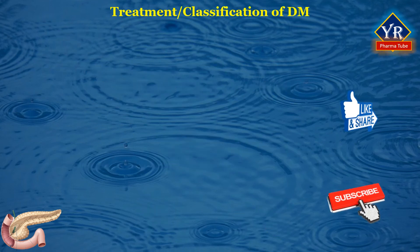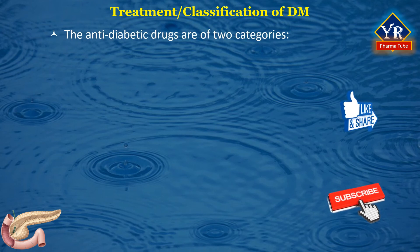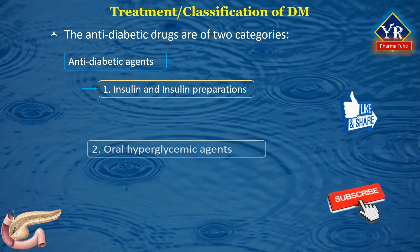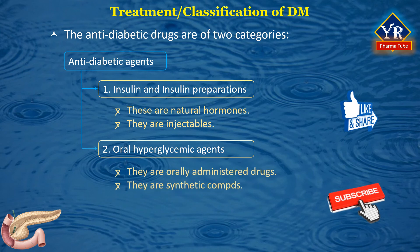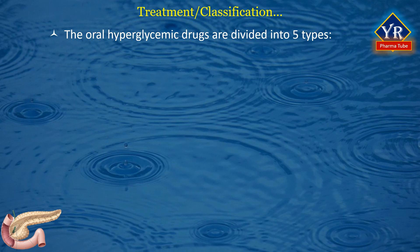Regarding treatment of diabetes mellitus: diabetes is a complex chronic disease with no cure. Therefore, therapy is directed at controlling hyperglycemia and reducing the symptoms and morbidities associated with microvascular and macrovascular complications. Two major classes of drugs used to treat diabetes include: number one, insulin and insulin preparations; and number two, oral hypoglycemic agents. Insulin and insulin preparations are natural hormones generally administered in injectable form, while oral hypoglycemic agents are administered orally and are mostly synthetic compounds. Oral hypoglycemic agents are further divided into five types.